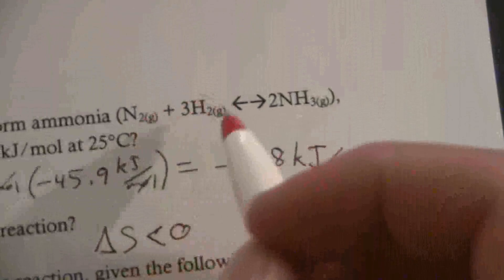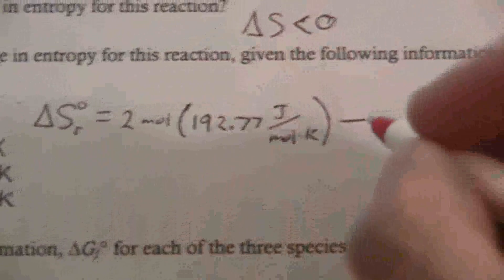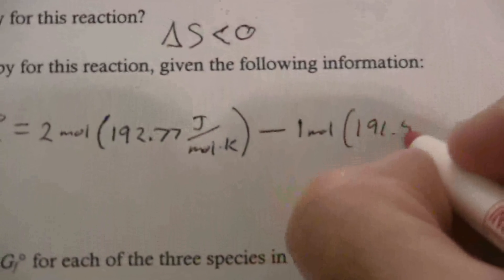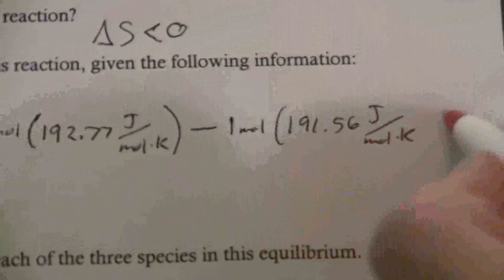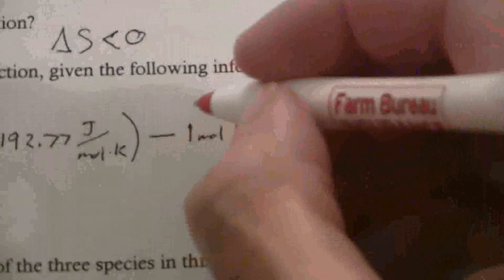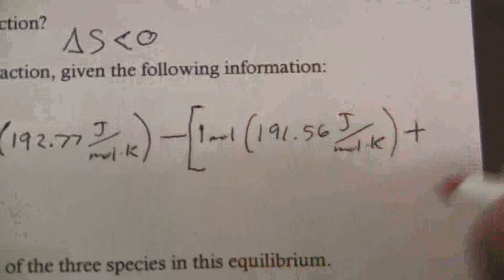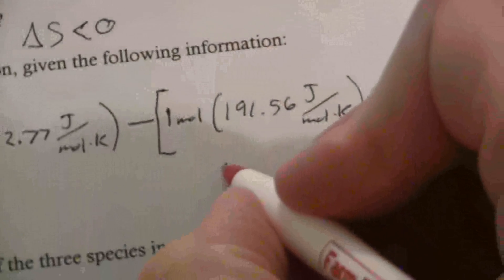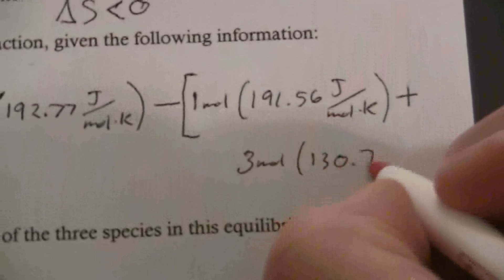And that's my products minus the sum of the reactants. So one nitrogen and three hydrogen. My nitrogen is 191.56, and I have one mole of the nitrogen at 191.56 joules per mole Kelvin. And I'll go ahead and put this in brackets here, because that'll be the sum of the reactants, but I'm subtracting the sum of the reactants. And then I have my three moles of hydrogen, and hydrogen is 130.7 joules per mole Kelvin.